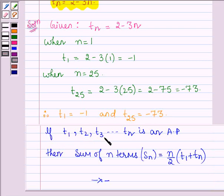If t1, t2, t3 up to tn is an AP, then the sum of first n terms denoted by Sn is given by n/2 into (t1 + the nth term).